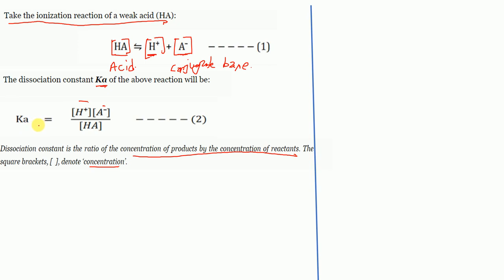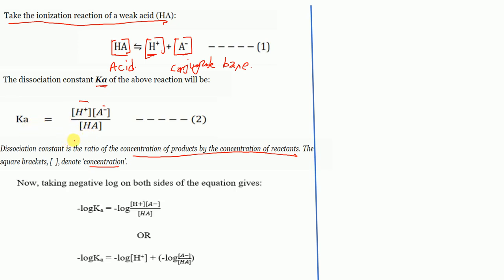Now we take the negative log on both sides. On the left: −log(Ka). On the right: −log([H⁺][A⁻]/[HA]), which by log rules becomes −log[H⁺] + (−log([A⁻]/[HA])). Since the terms are multiplied inside a log, we can separate them as a sum.